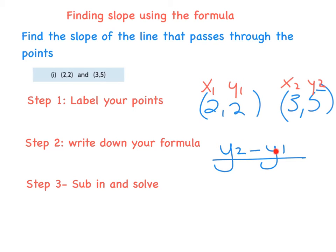And it is y₂ minus y₁ all over—and that line there means divided by—x₂ minus x₁. And the third step is to sub in and solve. So instead of writing y₂, I'm now going to write 5, and so it will be 5 minus 2.